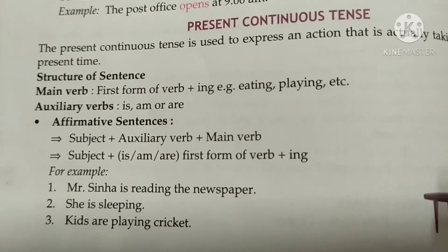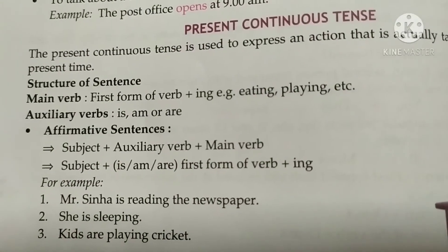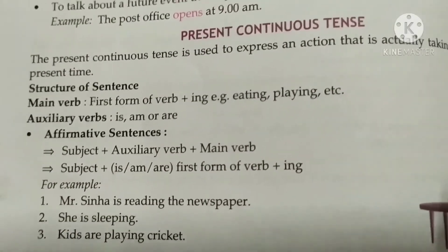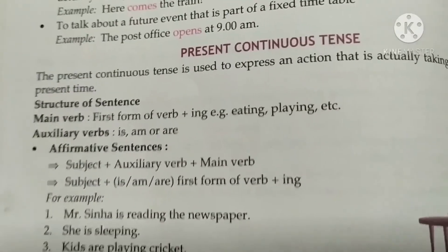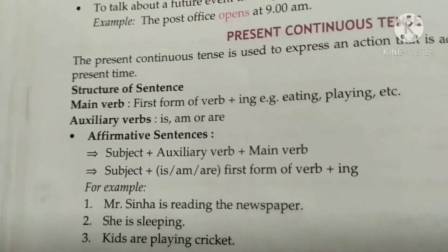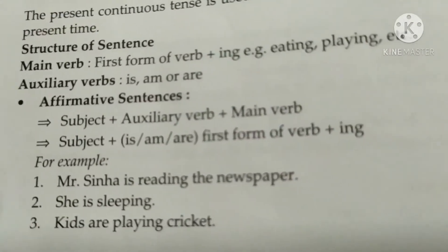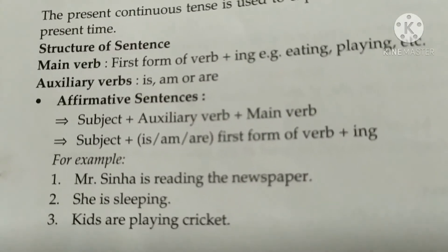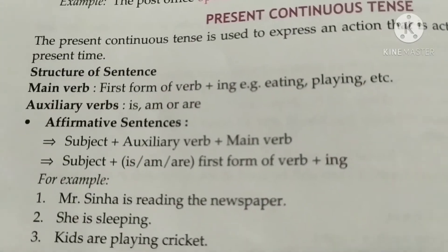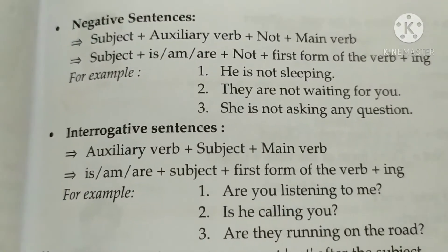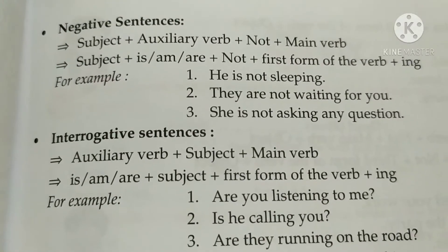For example, 'Mr. Sina is reading the newspaper.' This is present continuous tense because we add 'ing' to the main verb 'read,' making 'reading.' Mr. Sina is continuously doing this work — he has not stopped. Another example: 'He is sleeping,' 'Kids are playing.' These are examples of present continuous tense.